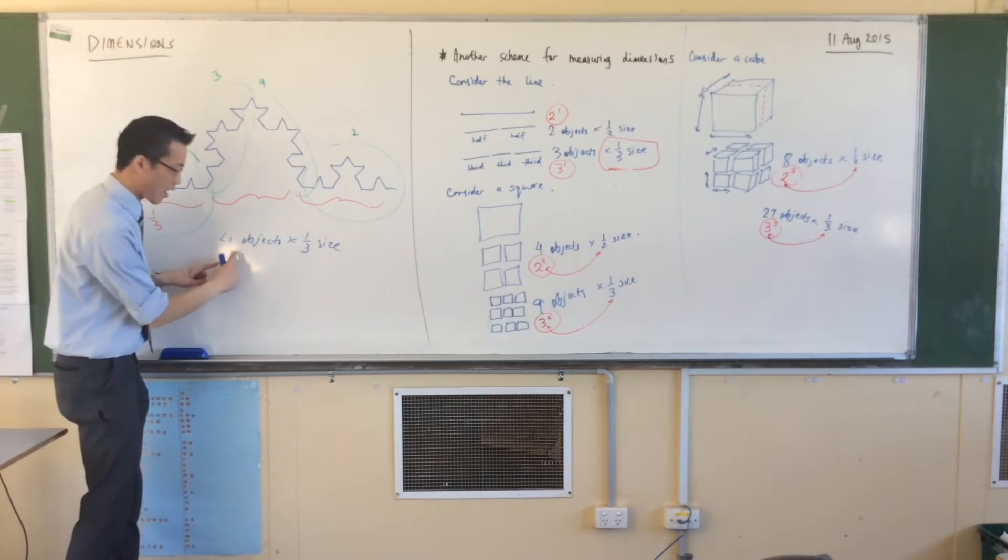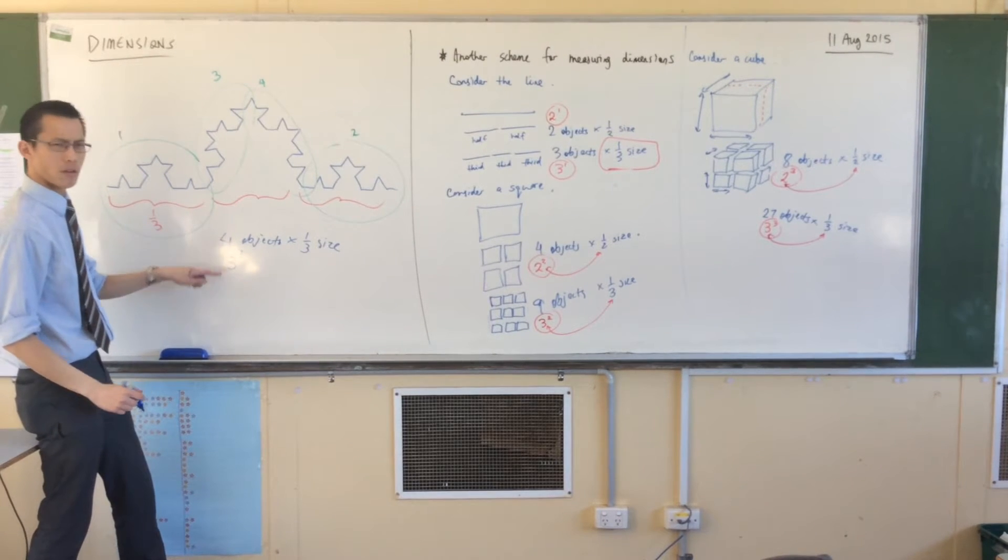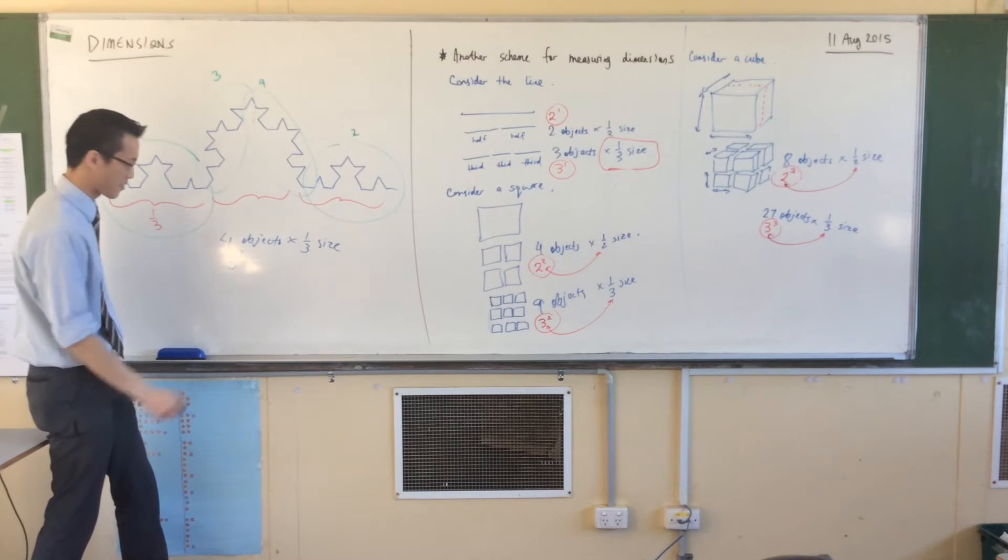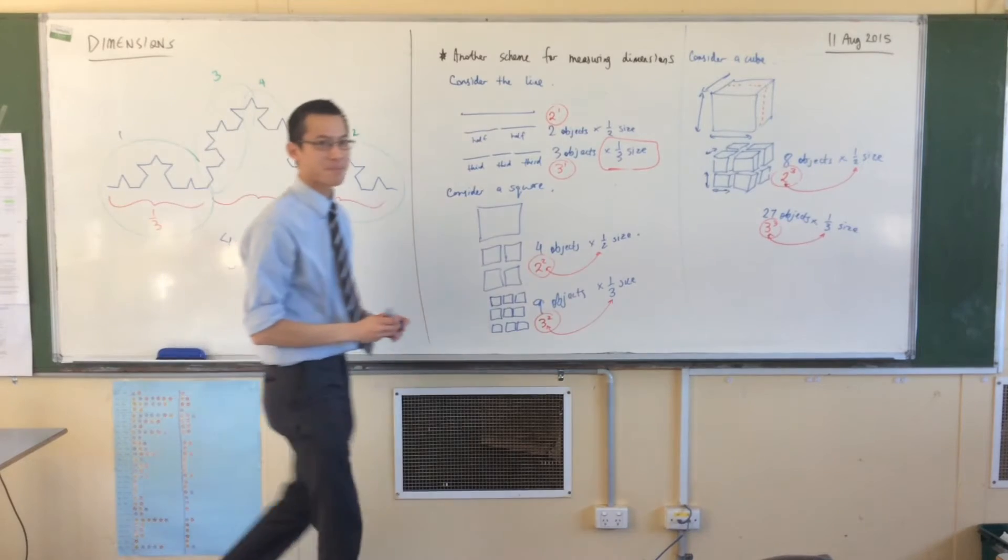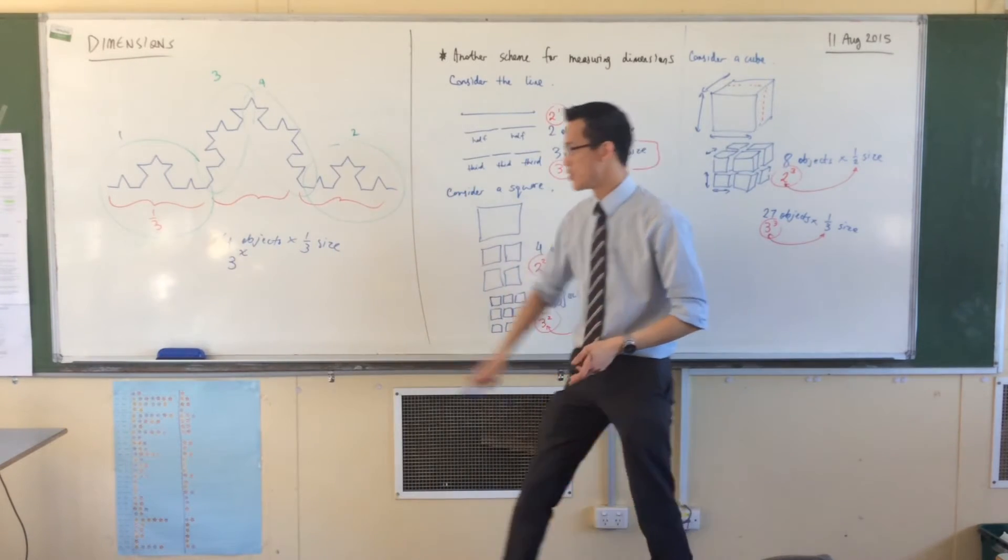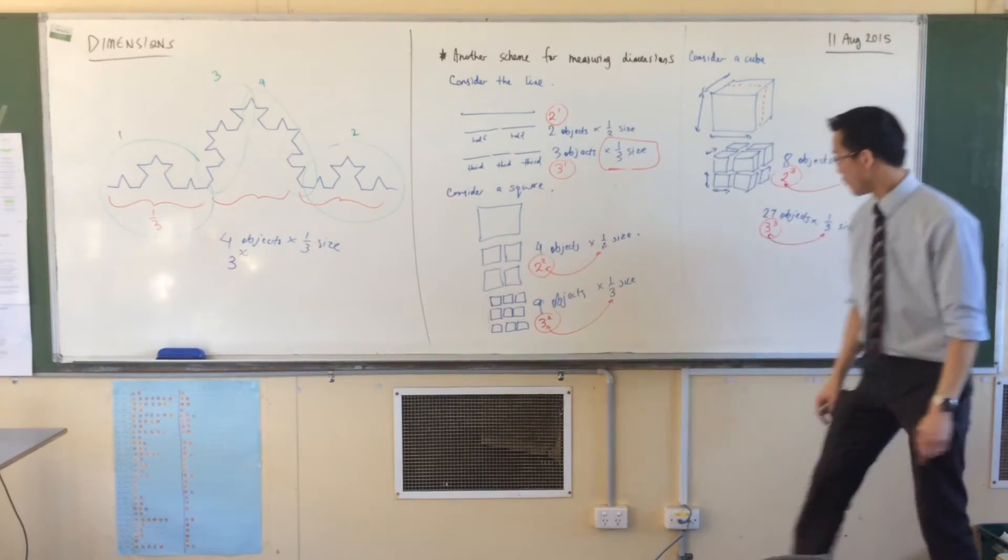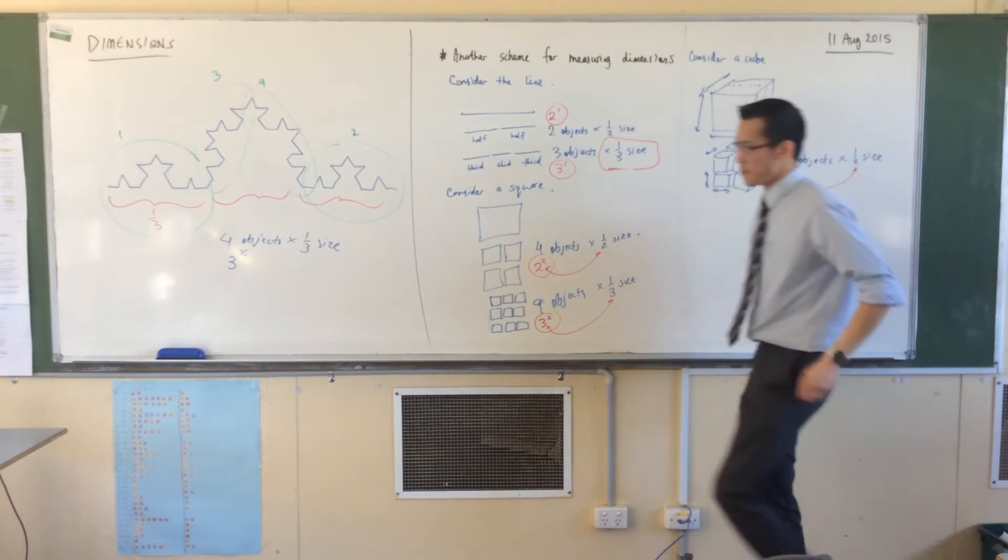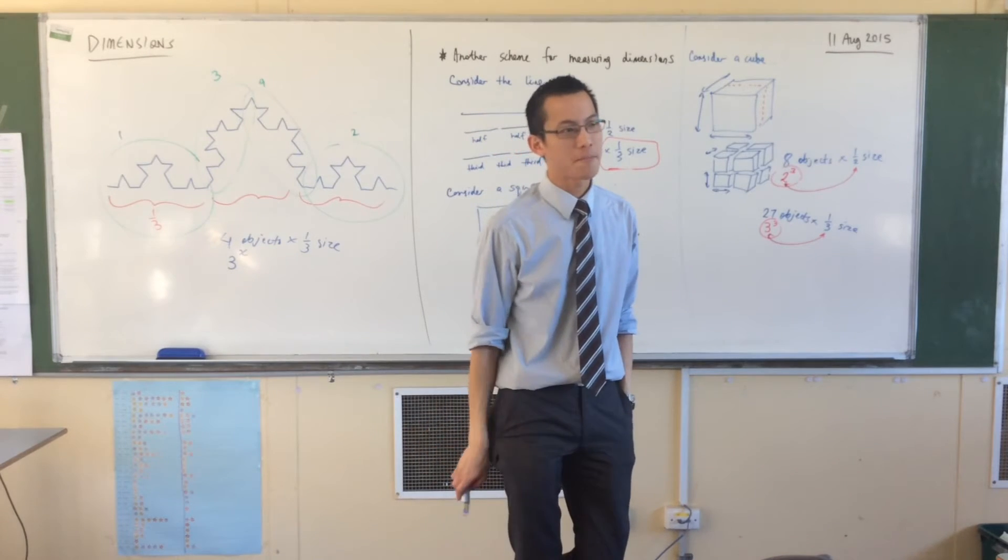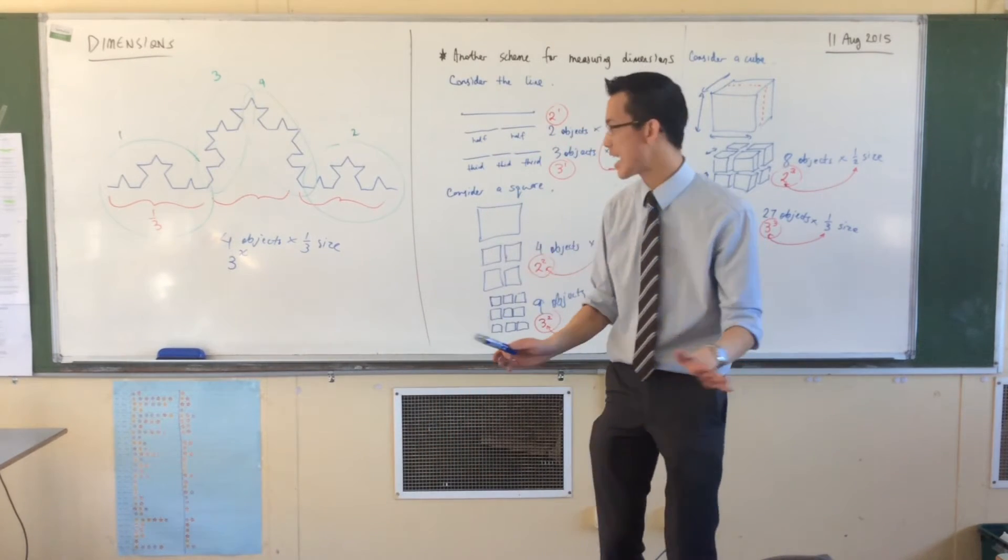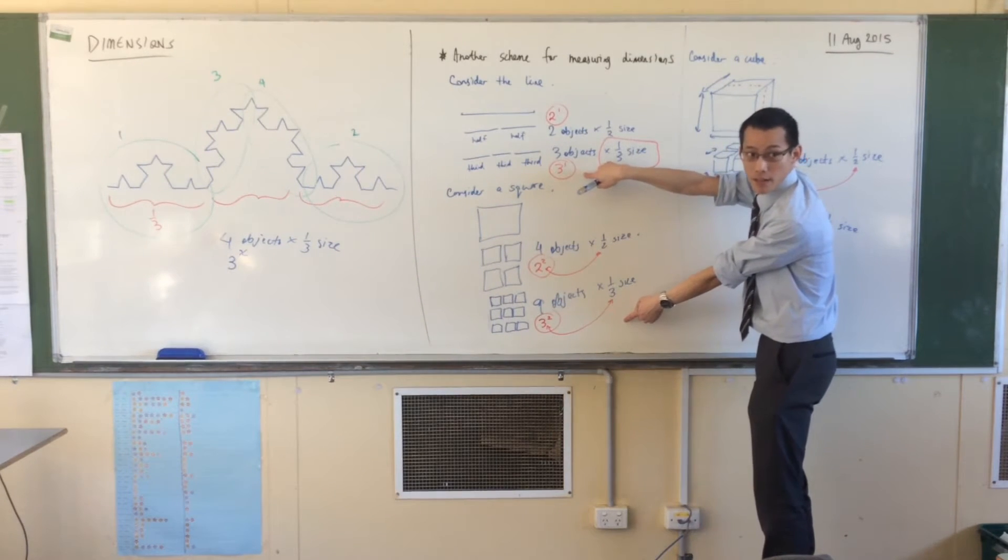Three to the power of something. Hold on a second. Four is not a nice, neat power of three, right? When we're trying to solve something we don't know, mathematicians tend to give it a name. So, there's some number. When you get three to the power of that number, you get four. If you get three to the power of two, you get nine. If you get three to the power of three, you get 27. Three to the power of some other number gives you four. It's clearly between one and two. Do you agree with that?